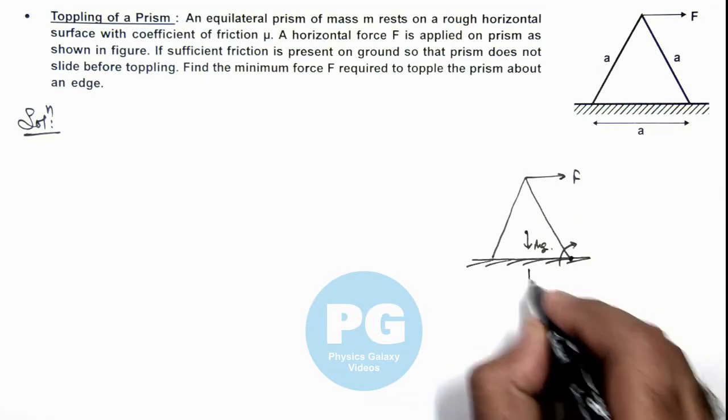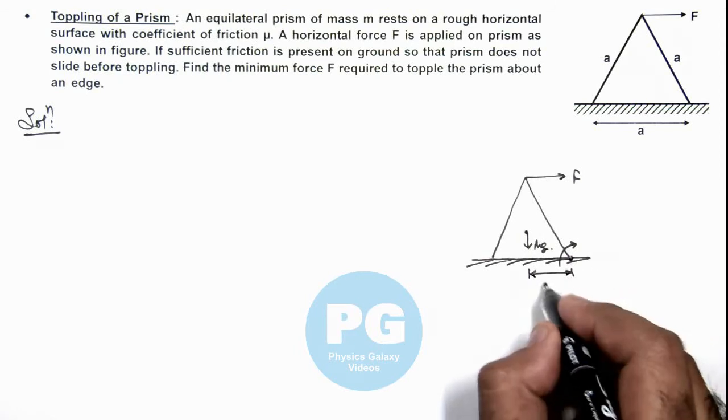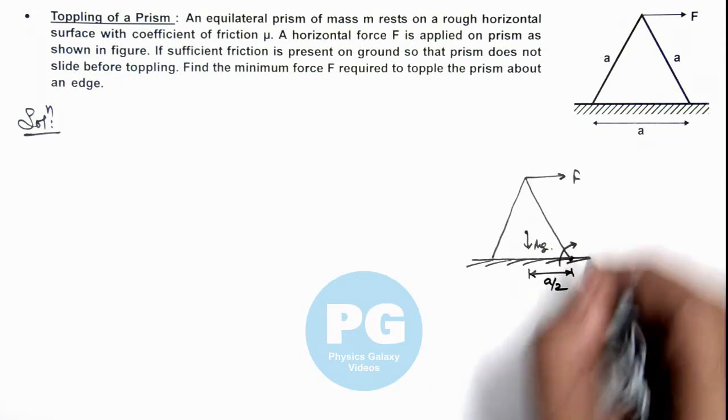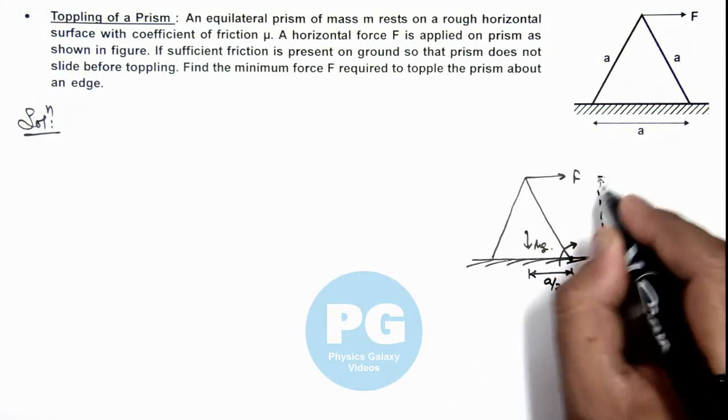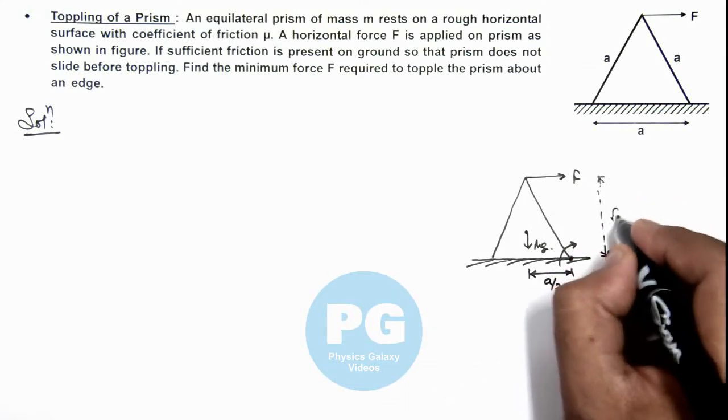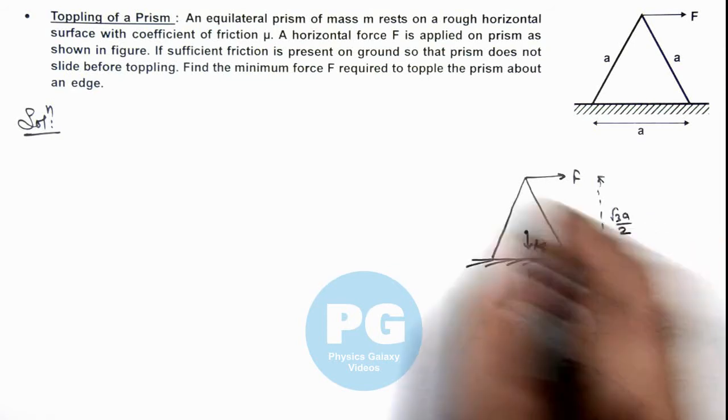And here the distance of the line of action of weight from one end is a by 2. And the height of this prism at which the force is acting is root 3 a by 2.